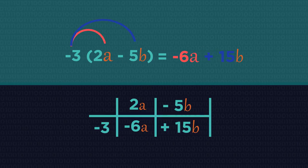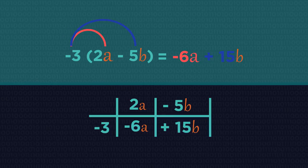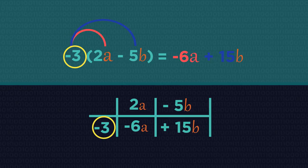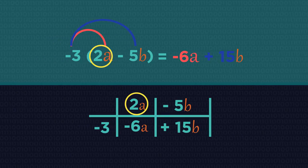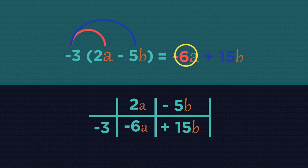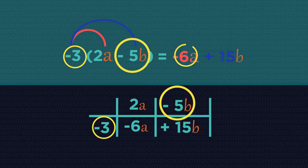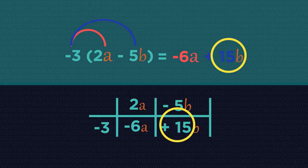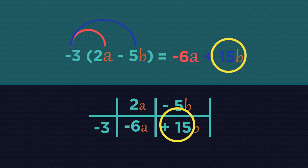Did you get negative 6a plus 15b? Negative 3 multiplied by 2a is negative 6a, and negative 3 multiplied by negative 5b is positive 15b, because negative times a negative is a positive.